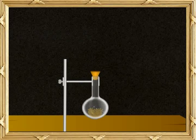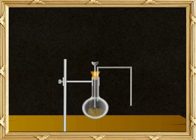This is a two-hole cork. Insert a thistle funnel through one hole and a delivery tube through the other hole.